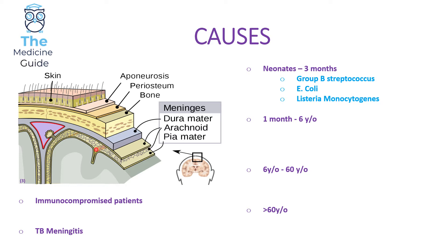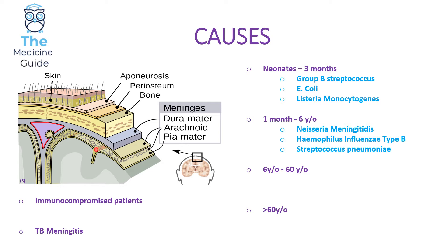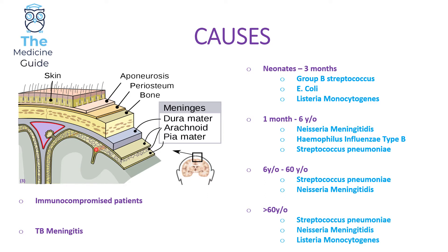If the patient is under the age of six years old — and there is some crossover between the neonates to three months category and the one month to six years category — they're likely to develop meningitis due to Neisseria meningitidis, Haemophilus influenzae type B, or Streptococcus pneumoniae. If aged six to 60, the likely organisms are Streptococcus pneumoniae and Neisseria meningitidis. Above the age of 60, Streptococcus pneumoniae, Neisseria meningitidis, and Listeria monocytogenes are all risks.